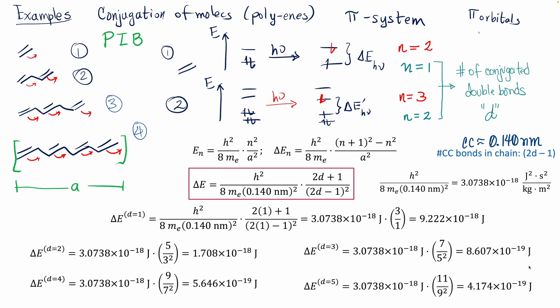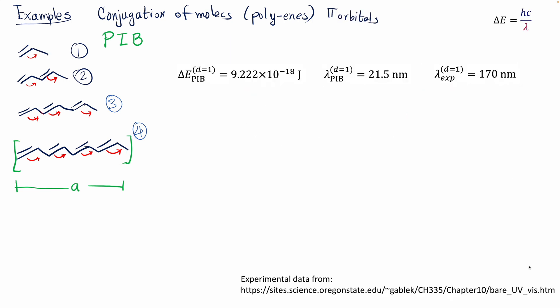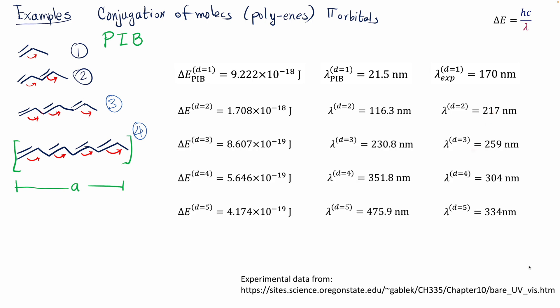In terms of absorption wavelength, for one double bond the model predicts about 21 nm, while the experimental value is 170 nm. For two double bonds, the model gives 116 nm versus an experimental 217 nm. The model doesn't give exact experimental results — it's a crude approximation with many simplifications — but it correctly identifies the ballpark range and trend for where these absorptions in energy and wavelength are located.